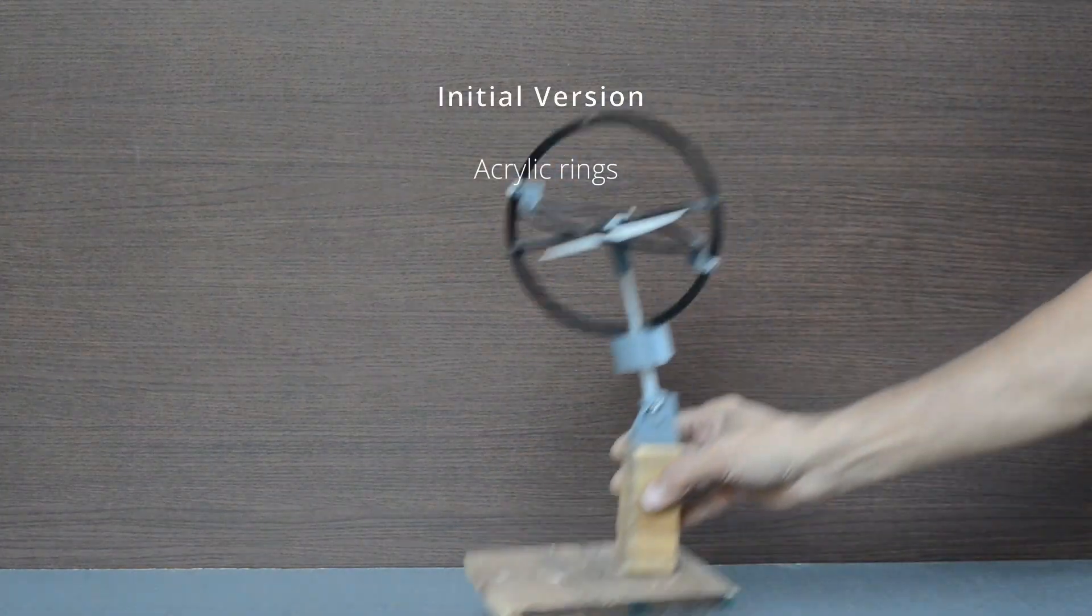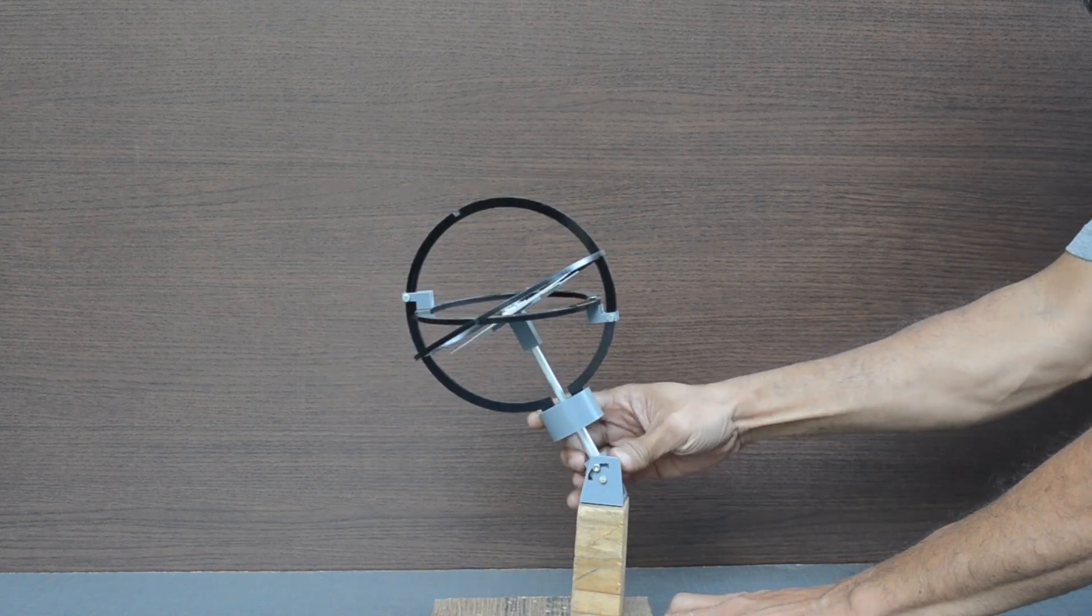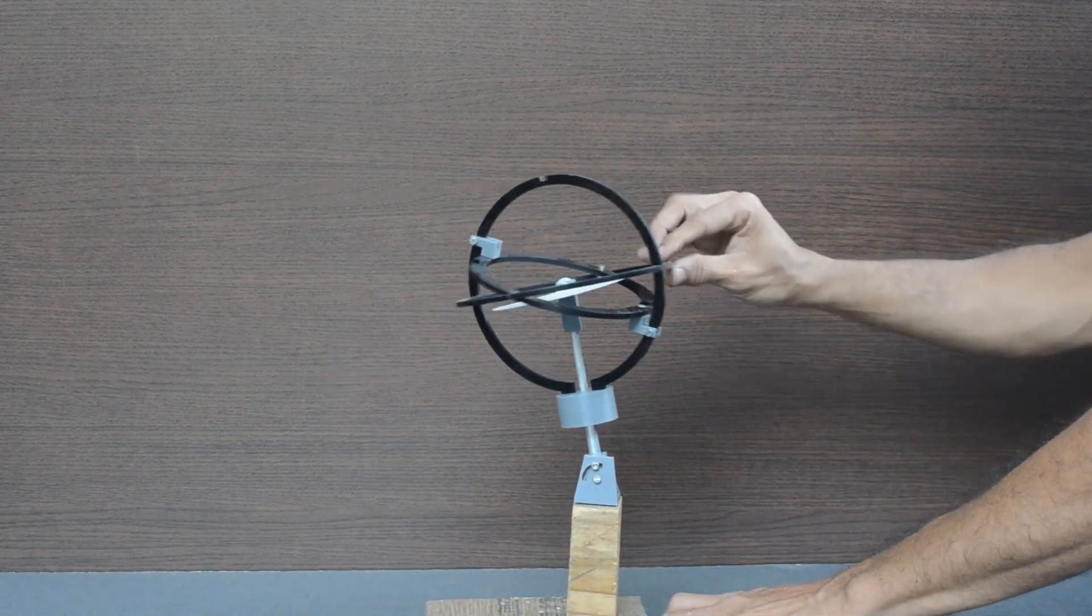This is the first version I built with acrylic and 3D printed parts. Ecliptic was inside and too small to cover the letters.